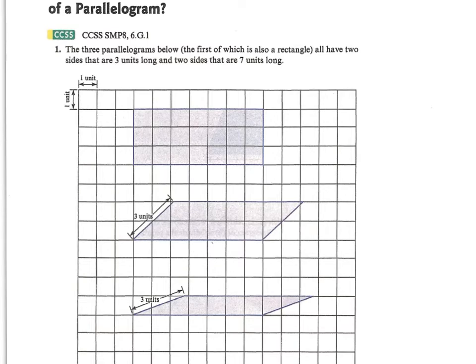Go ahead and pause the video and use the additivity and moving principles to determine the area of each of these. Don't just count different units that are on there. What you want to do is use what you know already for additivity and moving and determine what each of those areas are. Go ahead and do that, hit pause then come back.